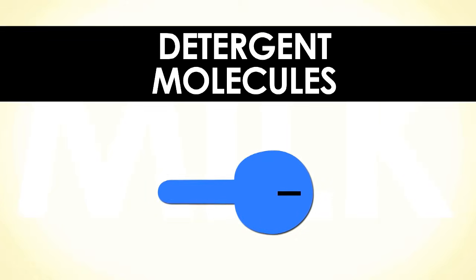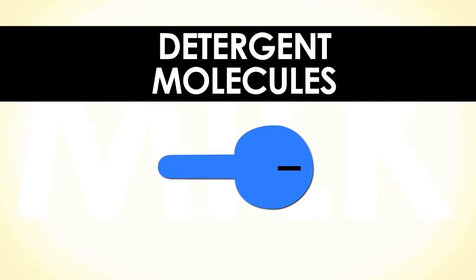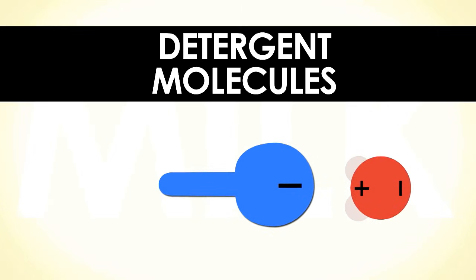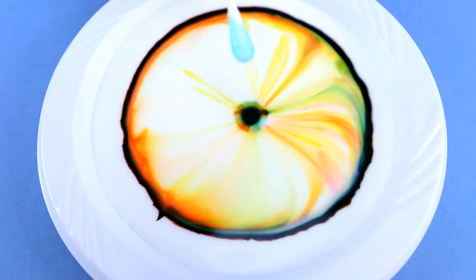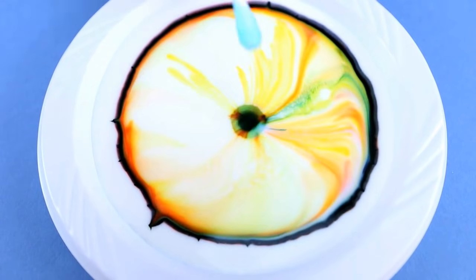So when you put detergent on the surface of the milk, the negative end of the detergent molecule attracts the positive end of the water molecule and the detergent zooms over the surface of the milk and pushes the food coloring to the edge of the plate.